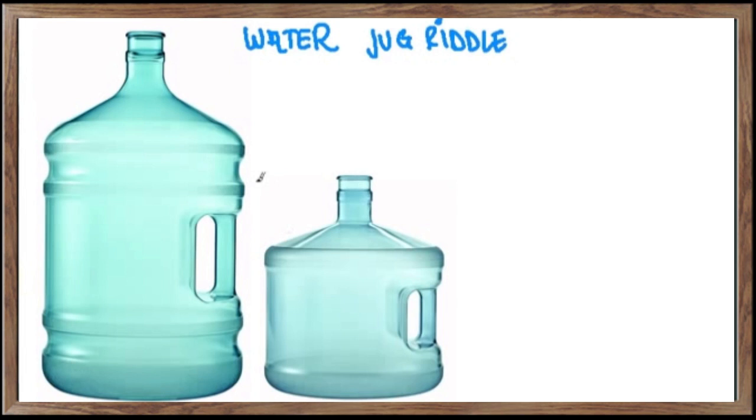The premise of the riddle is you have this jug of water right here, and it's empty, and it's five gallons. It holds exactly five gallons. And this jug down here holds exactly three gallons.